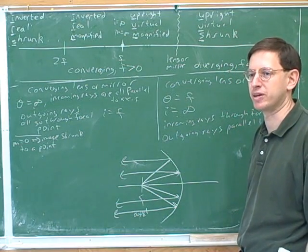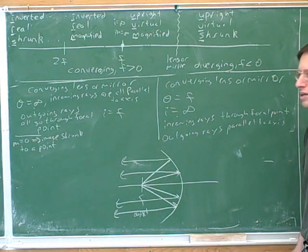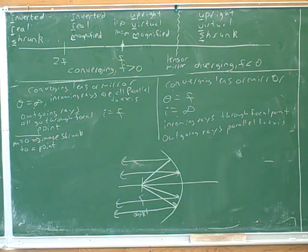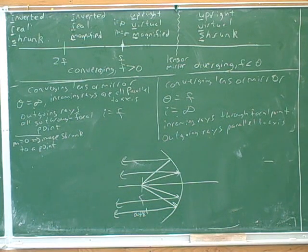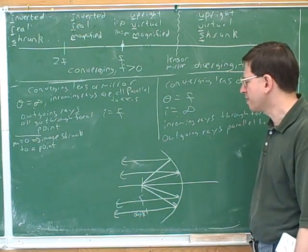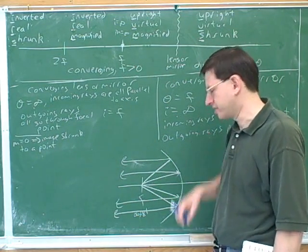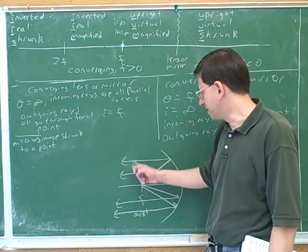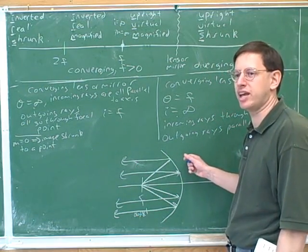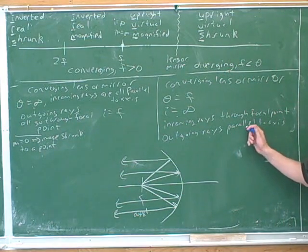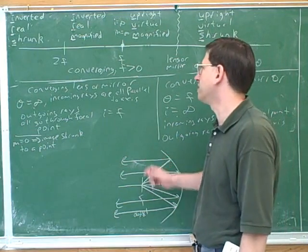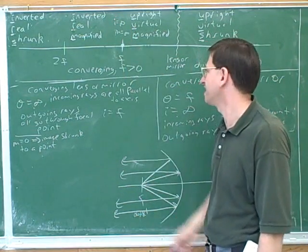These are both very common situations that can pop up on exams. The image is at infinity because the image is supposed to be where the outgoing light rays or their tracebacks converge. But these parallel rays will never converge, and their tracebacks won't converge either — they're all parallel to each other. That means you'd have to go to infinity before you could get the image, or put another way, there is no image.